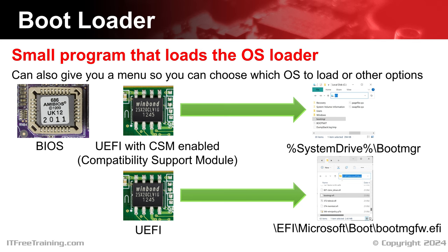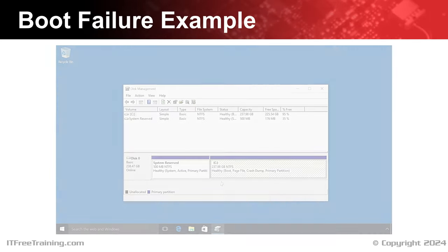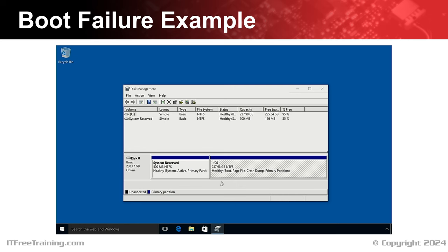Let's now have a look at a problem you could potentially come across and how to fix it. In this example, I have a computer running Windows 10 with two partitions: the first is system reserved, containing boot configuration, Windows recovery, and reserved space for BitLocker; the second, much larger partition holds all the data for the operating system. Importantly, there is no partition containing the EFI bootloader file — the computer is booting using the boot sector and has no way of booting using the EFI bootloader.